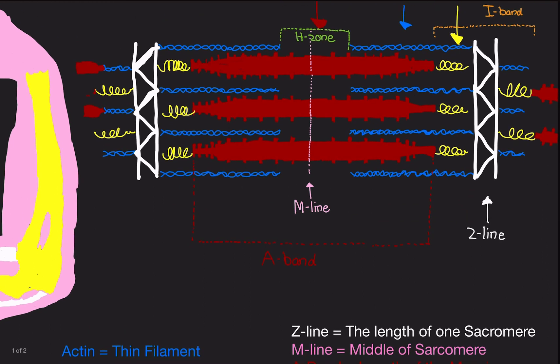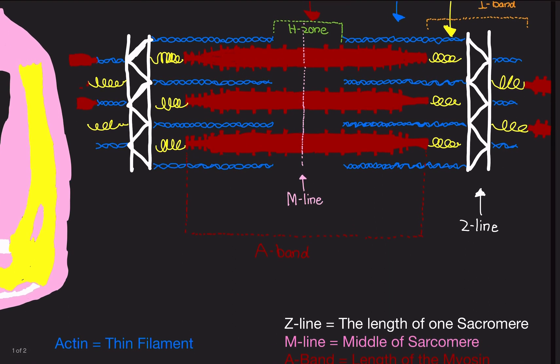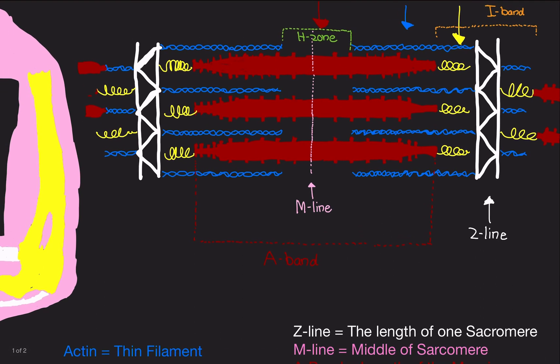The M-line is really easy. It's literally the middle of the sarcomere. If you were to cut the sarcomere in half, that's the M-line. M meaning middle.